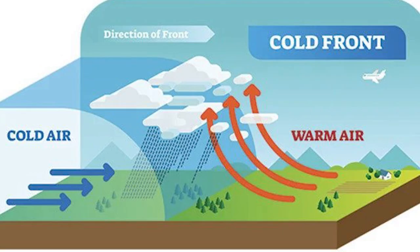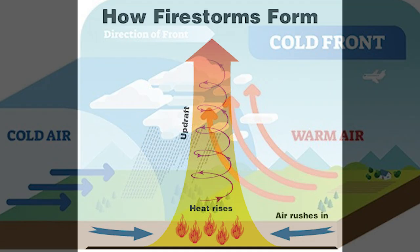A cold front is a leading edge of a cooler mass of air at ground level that replaces warmer air. It's usually hundreds of miles long and has been the leading cause of some weather-based disasters. On the day of the slash and burn, a cold front came in from the west and started to fan the flames until they were brutally out of control, forming the natural phenomenon known as a firestorm.